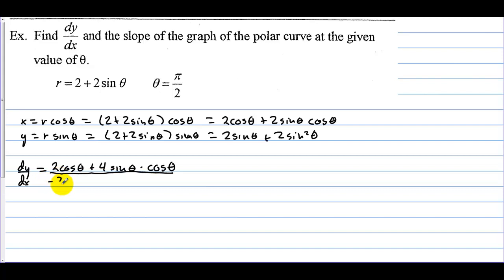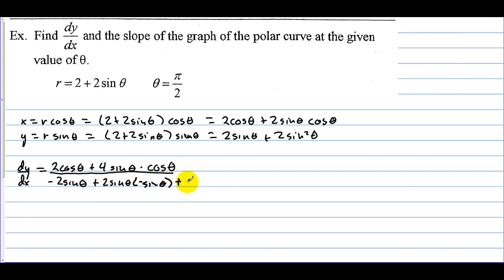For the derivative of x we have negative 2 sine of theta, and then using the product rule: first times the derivative of the second, which is negative sine of theta, plus the second times the derivative of the first, which is cosine theta.